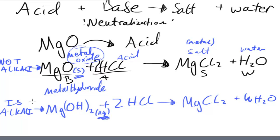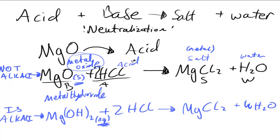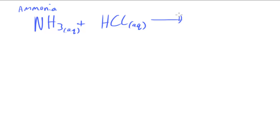Another acid-base reaction to look at involves ammonia. Ammonia can be called an alkali because it dissolves in water. NH₃ (aqueous) reacts with HCl (aqueous). Since bases accept protons, ammonia accepts a proton and forms NH₄⁺ — a positive ion.